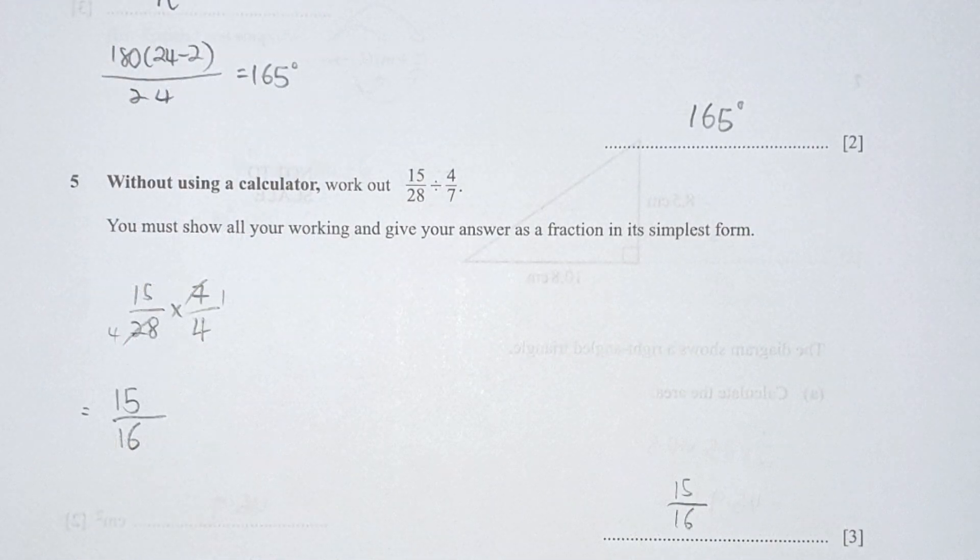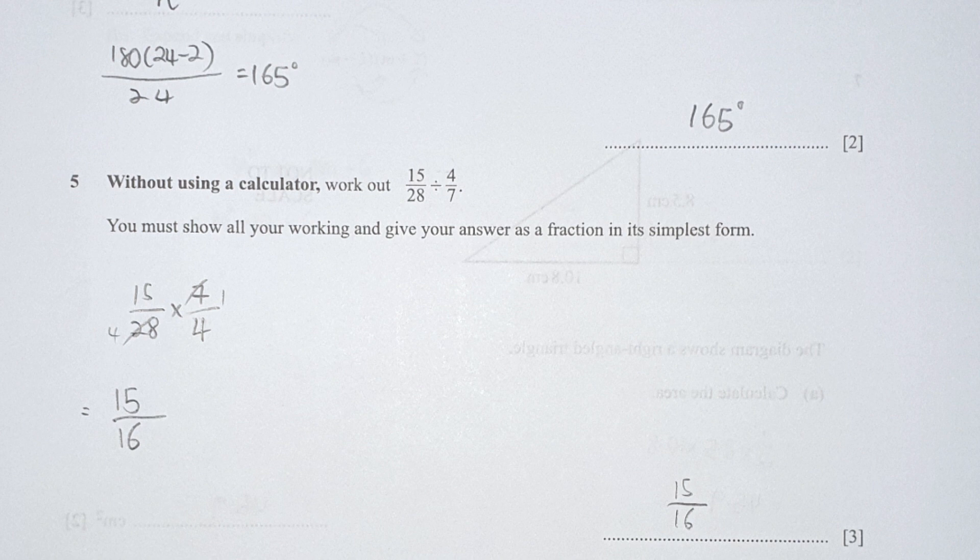For question 5, I change the divide into multiply by changing the original denominator into the numerator's position, and vice versa. 7 and 28 can be further simplified, so you get 15 times 1 over 4 times 4, which is 15 over 16.